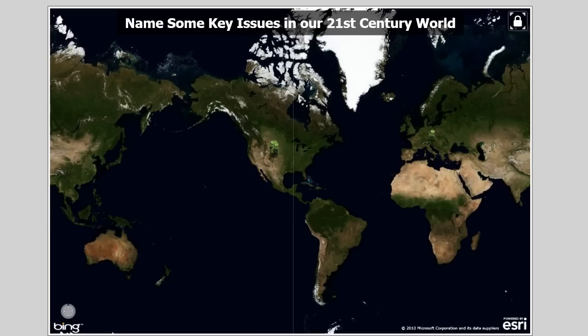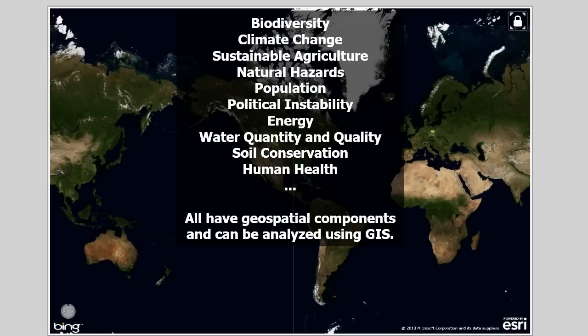One of the ways I'd like to go through this workshop is to model what you would do in the classroom. One way to get your students excited about spatial thinking and GIS technology is to start a discussion: name some key issues in our 21st century world. You and your students would come up with things like biodiversity, climate change, sustainable agriculture, and so on. All of these key issues have geospatial components — they all have the 'where' question and the 'whys of where' question — and thus they can be analyzed using a GIS.